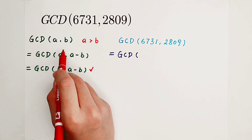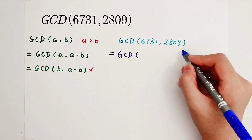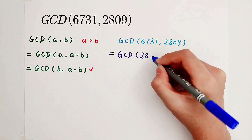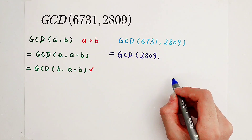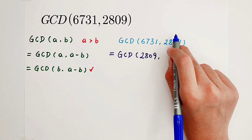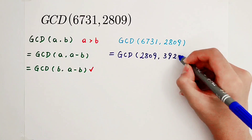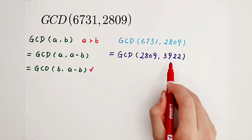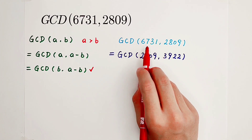The GCD of A and B is equal to the GCD of B and A minus B. Put the number which is small first: it is 2809. Then the subtraction of these two numbers — the big one minus the small one — and you can see 3922. Two small numbers, and of course they are both smaller than 6731.